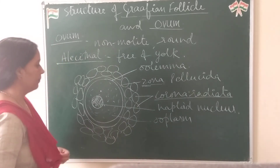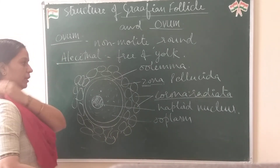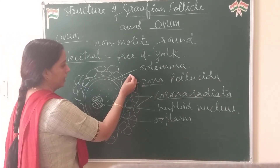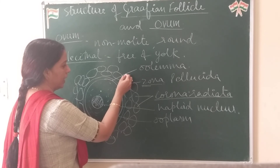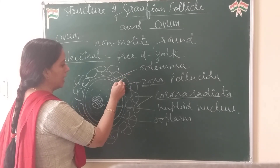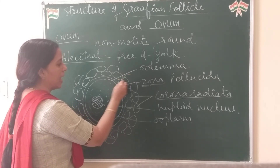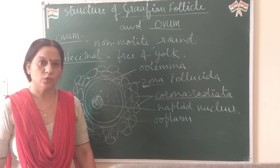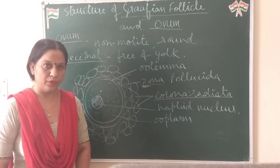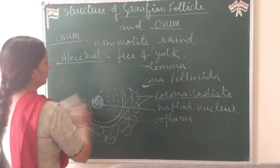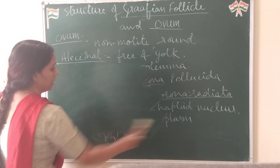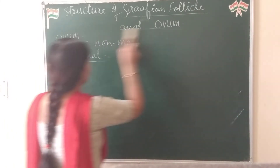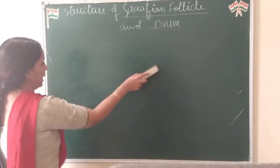During fertilization, sperms enter and take entry through the corona radiata, then bind at specific receptors of the zona pellucida. We will see the process of fertilization in the next video.